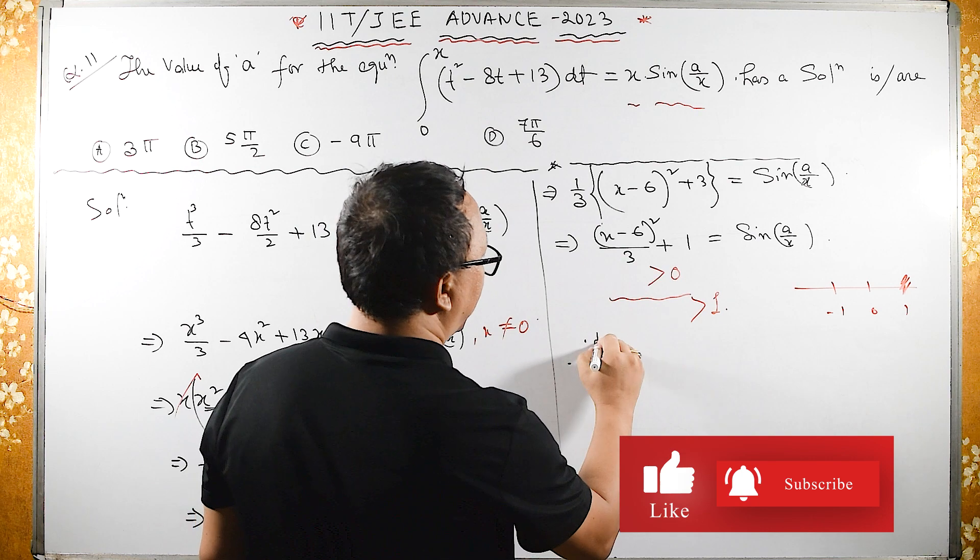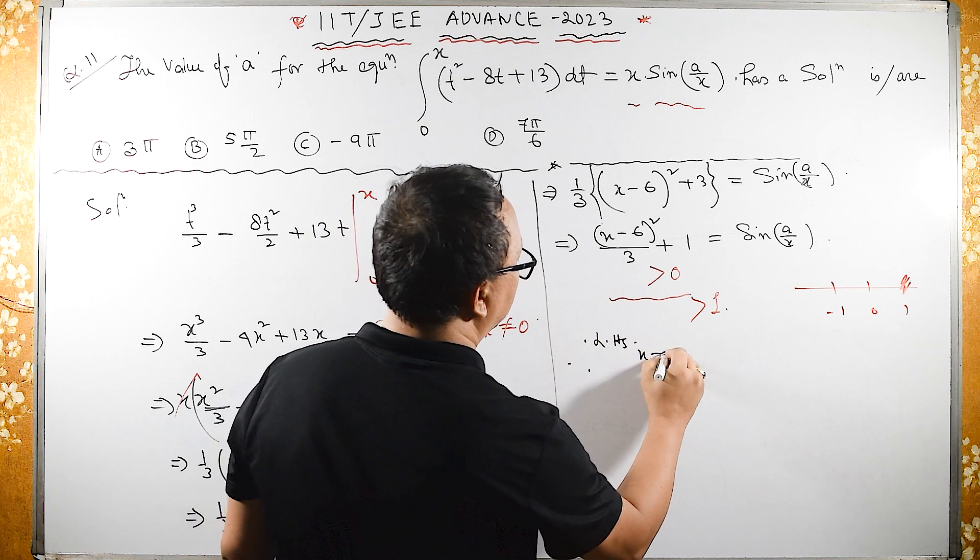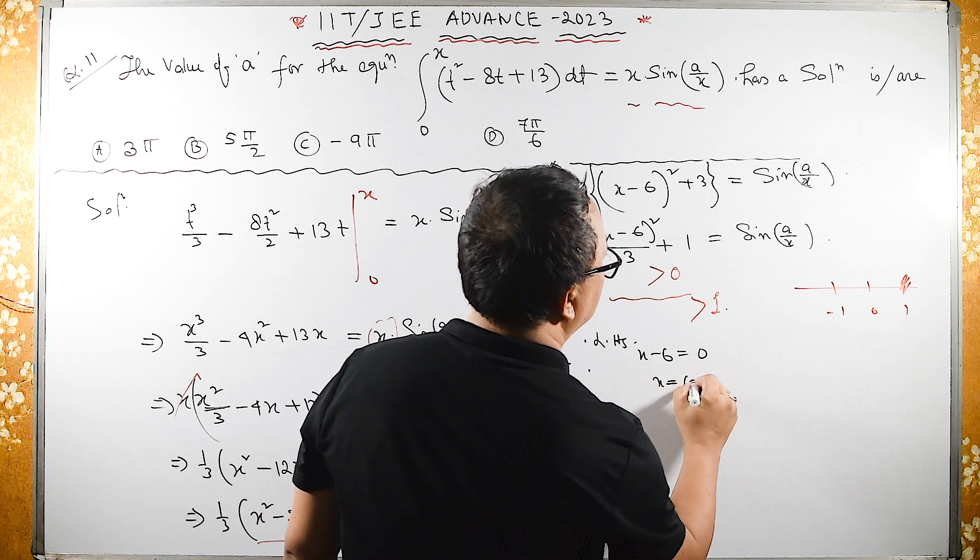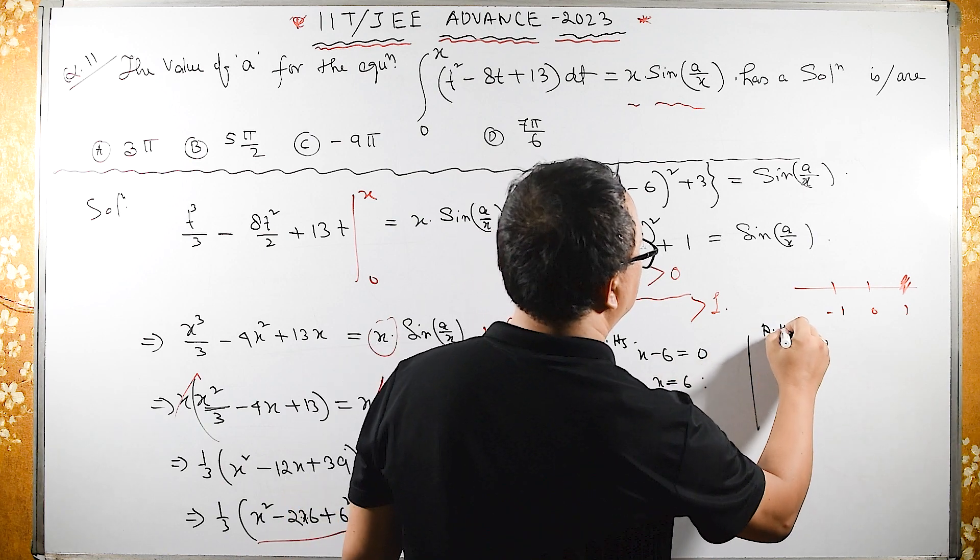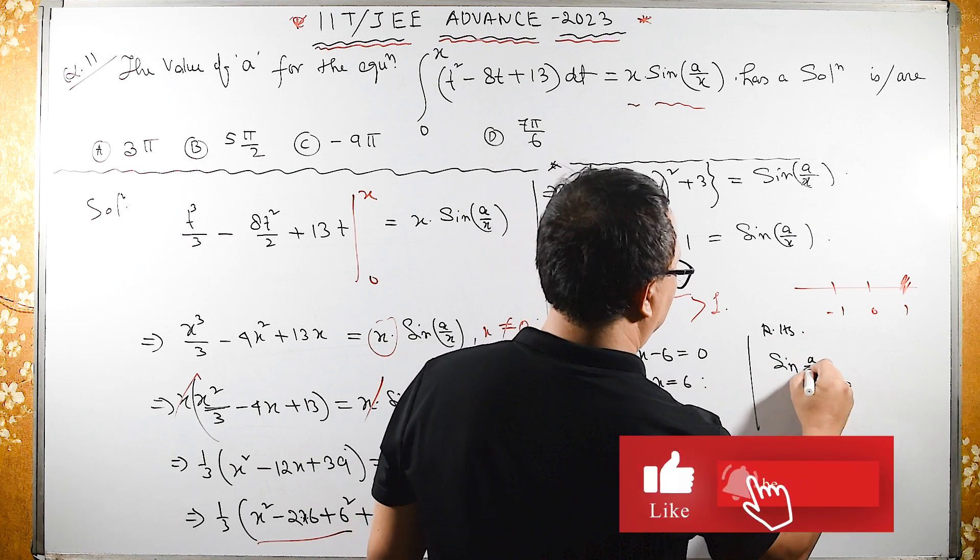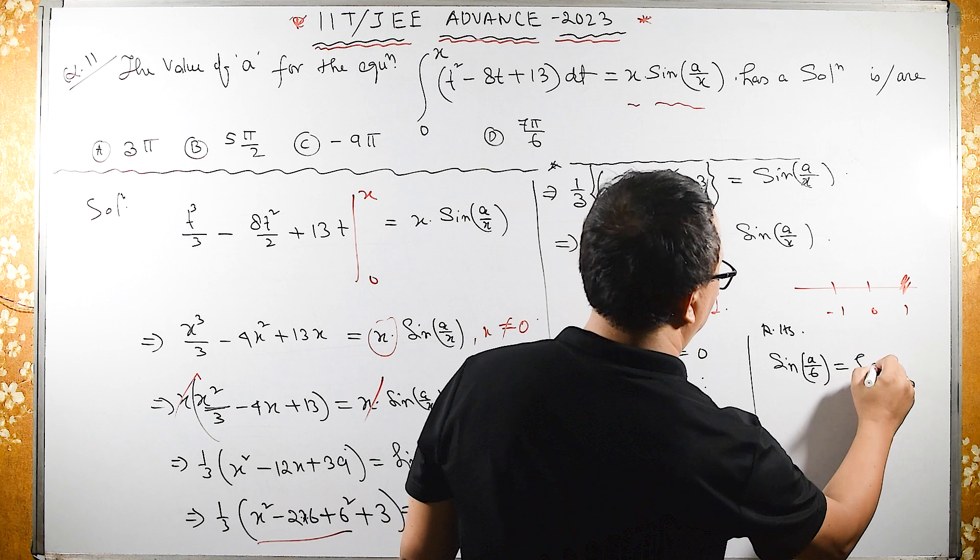Therefore on the left hand side, X - 6 should equal 0, meaning X equals 6. From the right hand side when X equals 6, we have sin(A/6) equals 1.